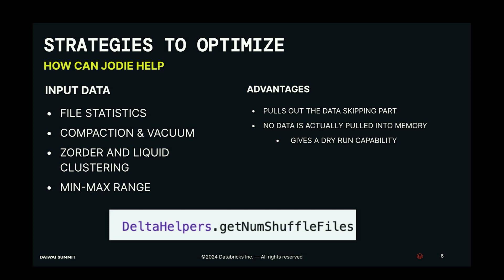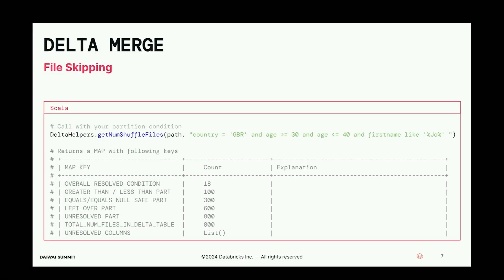Jodie has a method called `get_num_shuffle_files` where you can run this method before and after you run compaction, and see how many files became candidates for data skipping — whether the files you intended are included or no longer included. You put in your merge condition the same way you put it in your merge. The output shows an overall result condition telling you how many files are finally part of that shuffle due to data skipping, breaking it down by each condition clause.